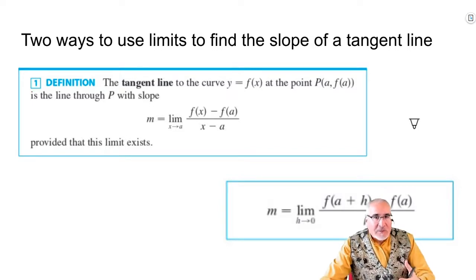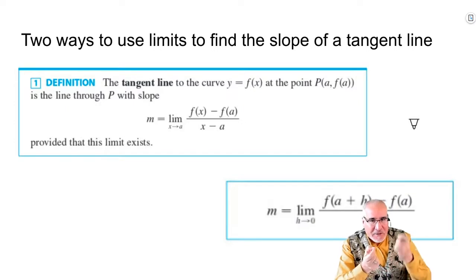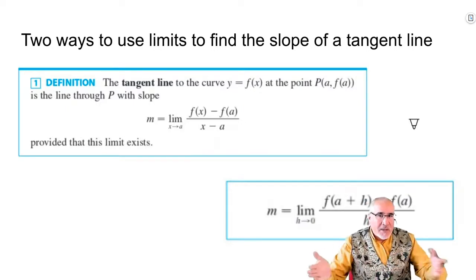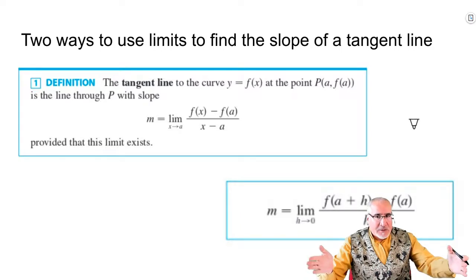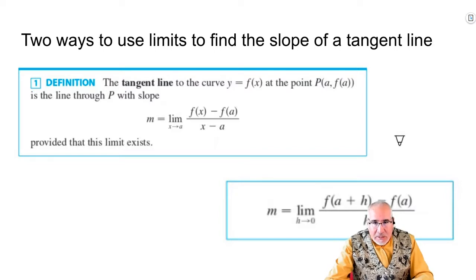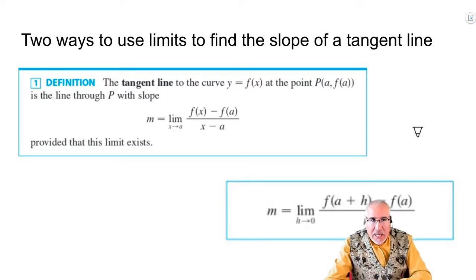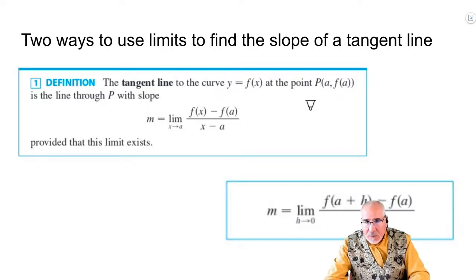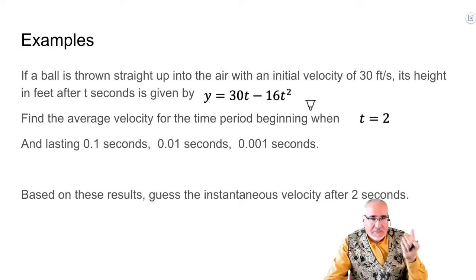So the difference is: on your car speedometer, that's giving you an instantaneous reading of how fast you're going right now. Somebody measuring your speed, even with a radar gun, is taking two-point measurements and actually getting an average speed. But it can get very close to that instantaneous rate of change if the time between the measurements is very small.